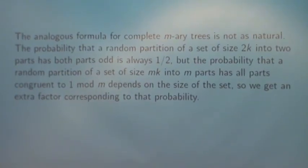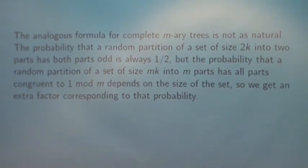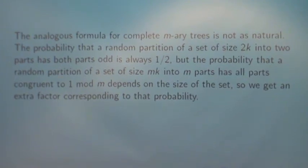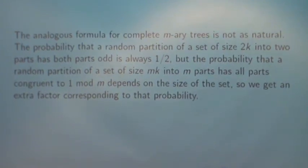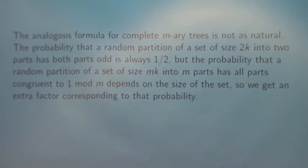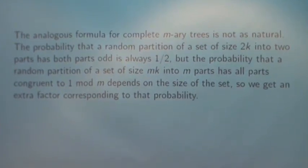So we had this question a minute ago — what happens if you try this algorithm for M-ary trees? Well you can do the algorithm. The problem is that you get a term that isn't very nice. If you partition a set of size 2k into two parts, the probability that both parts are odd is a half. If you partition a set of size Mk into M parts, for the tree to stay complete, you have to have all parts congruent to 1 mod M. And that is not only something that depends on the size of the set, but something that doesn't even have a nice formula. So you'll get a formula like Han's formula, but with an extra term which is just the probability of partitioning a set of size Mk into M parts, each congruent to 1 mod M.